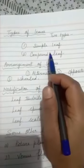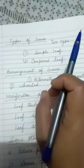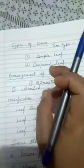A leaf with an undivided lamina, that is the lamina as a whole, is known as the simple leaf. The bud present is found in the axil of the leaf. Mango, papaya and guava are the examples of plants with simple leaf.